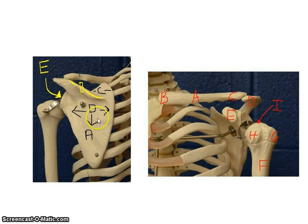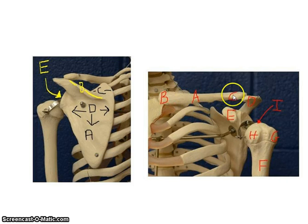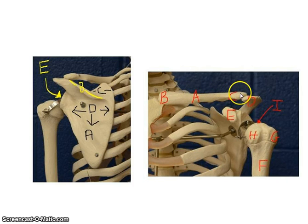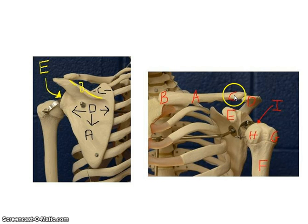Here we have a posterior view of the shoulder and here we have an anterior view. Starting with the anterior view, this is the clavicle. There are two ends to the clavicle: the sternal end, which articulates with the sternum and is boxier, and at the opposite end is the acromial end of the clavicle — notice how flat that end is.